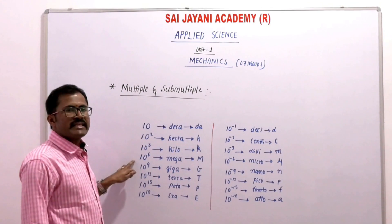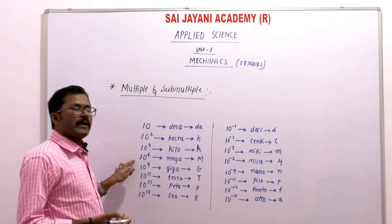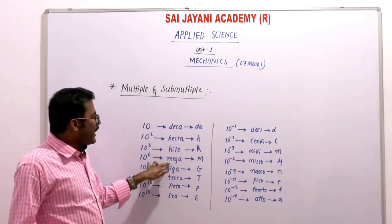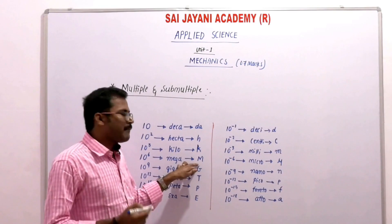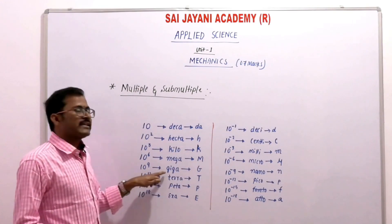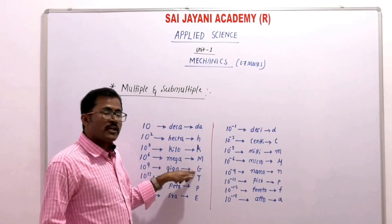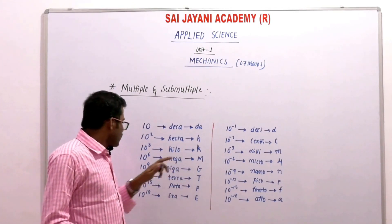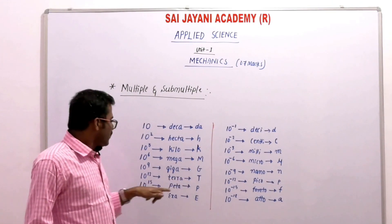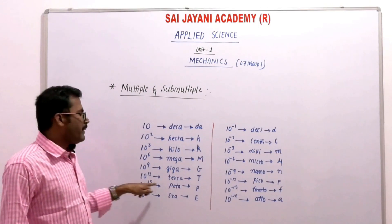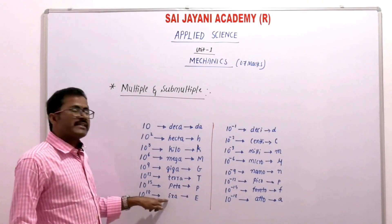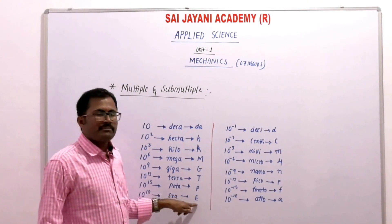Next, 10 to the power 6 is a huge value, represented as mega, using capital 'M'. 10 to the power 9 is giga, represented by capital 'G'. 10 to the power 12 is tera, represented by capital 'T'. 10 to the power 15 is peta, represented by capital 'P'. 10 to the power 18 is exa, represented by capital 'E'.